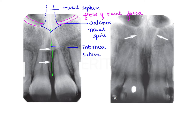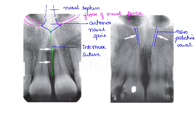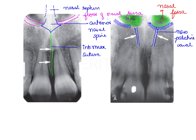Moving on to the second radiograph, we can find a structure marked by white arrows on either side of the midline — this is the nasopalatine canal. Apart from that, in the same radiograph, there is a radiolucency on top, which is the nasal fossa. The lining of the nasal fossa is what we see as the radio-opacity running on either side of the anterior nasal spine.